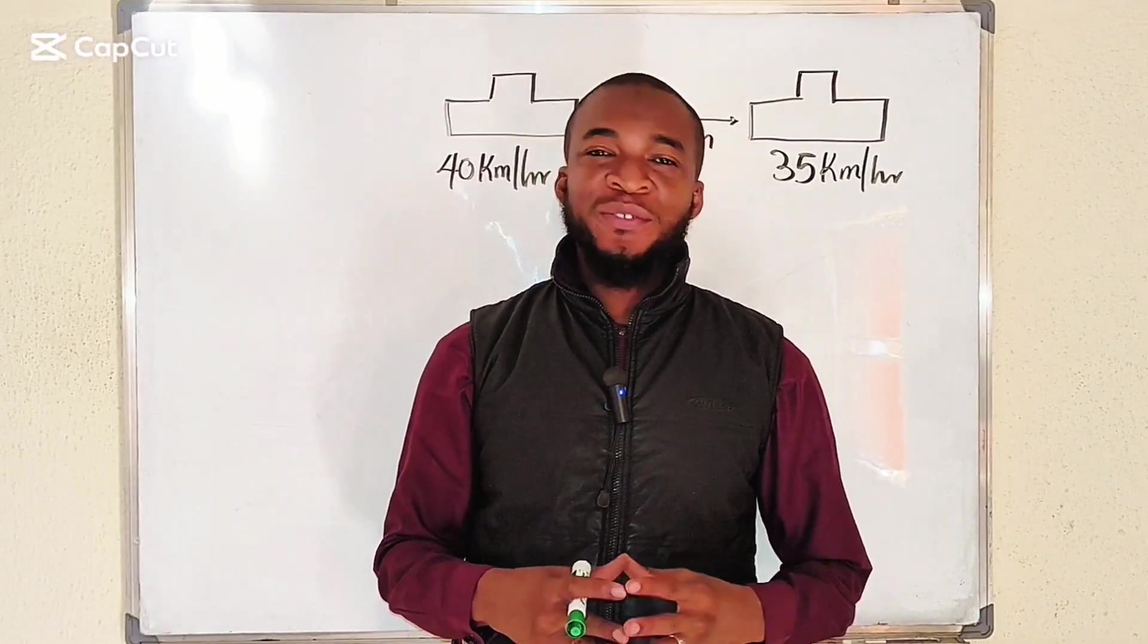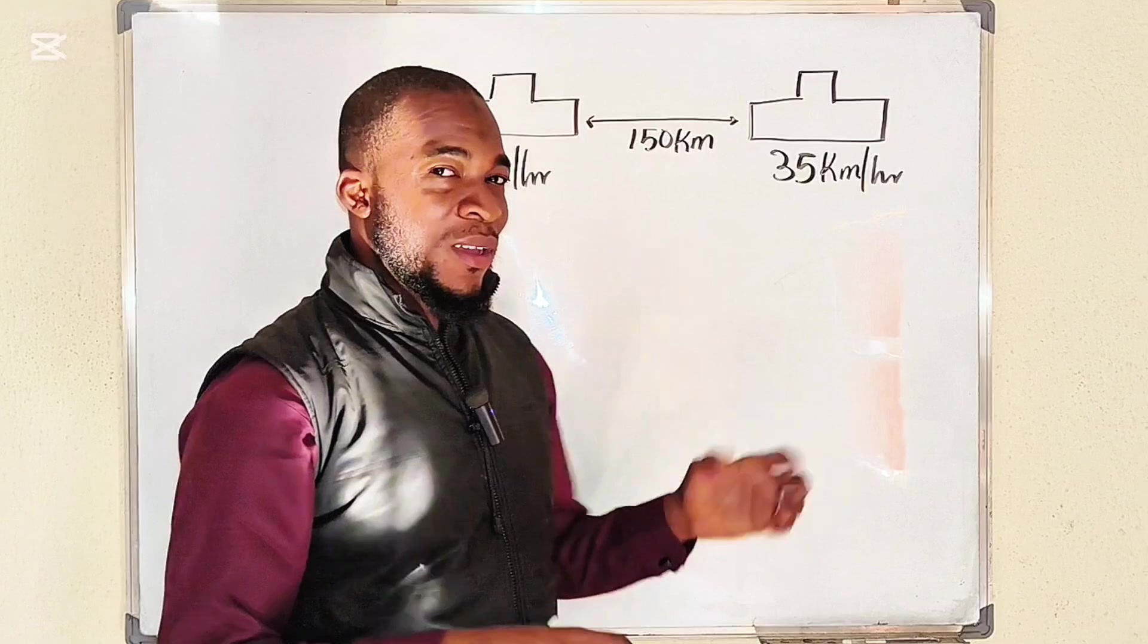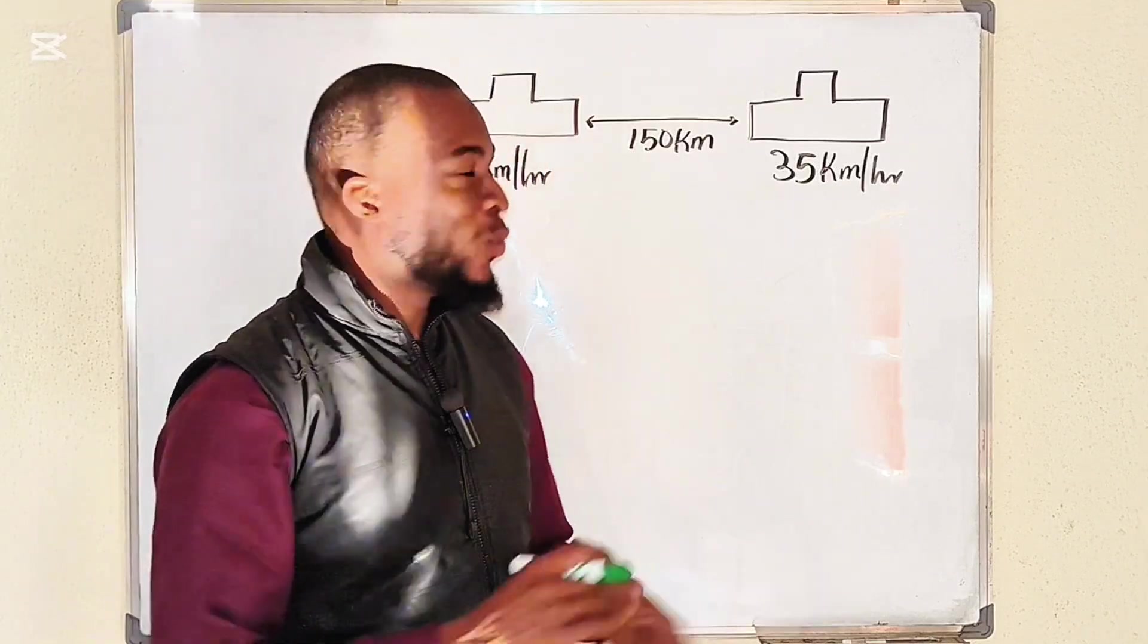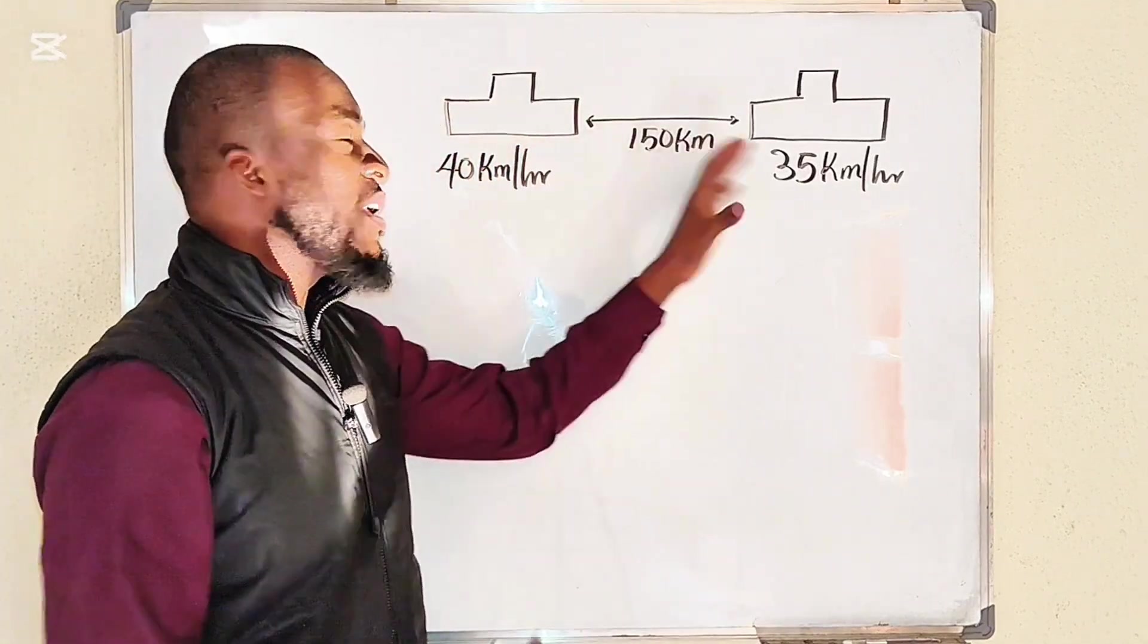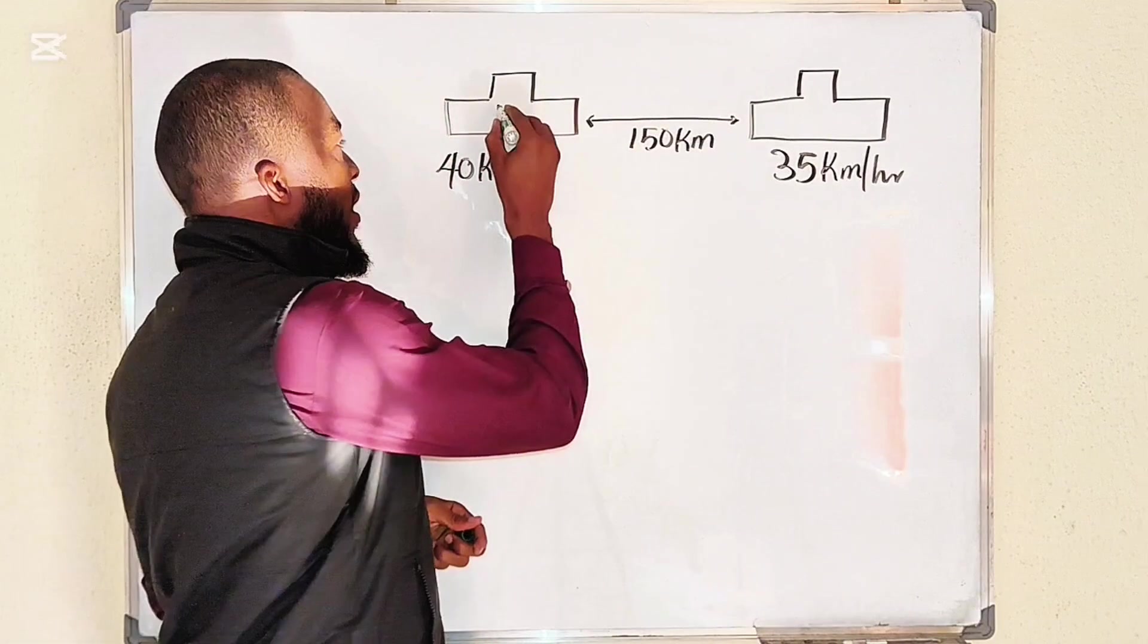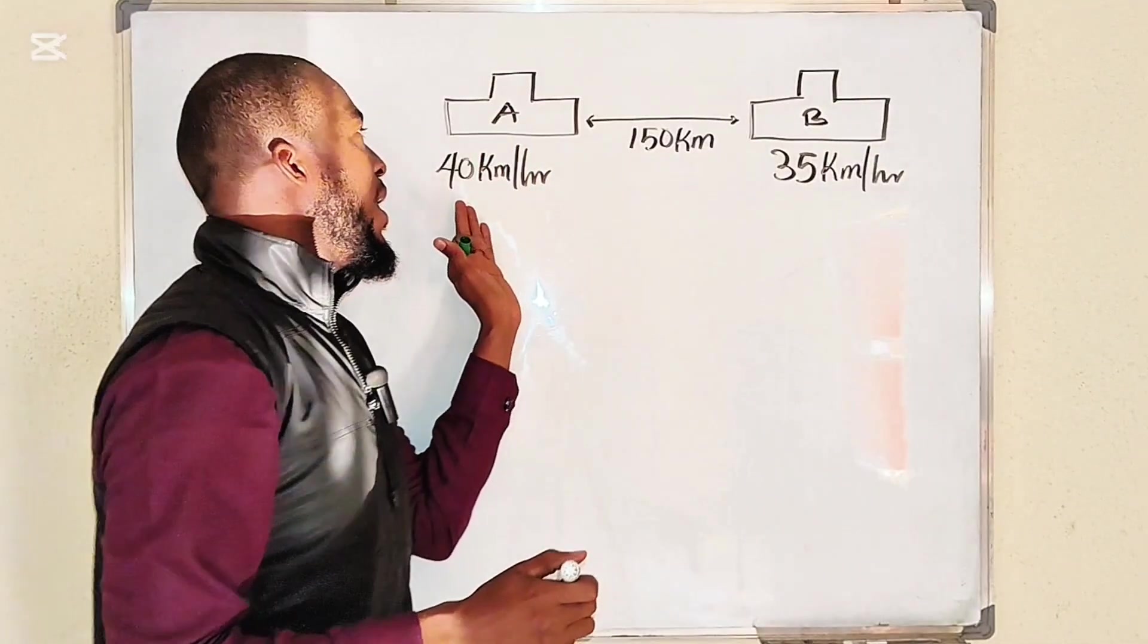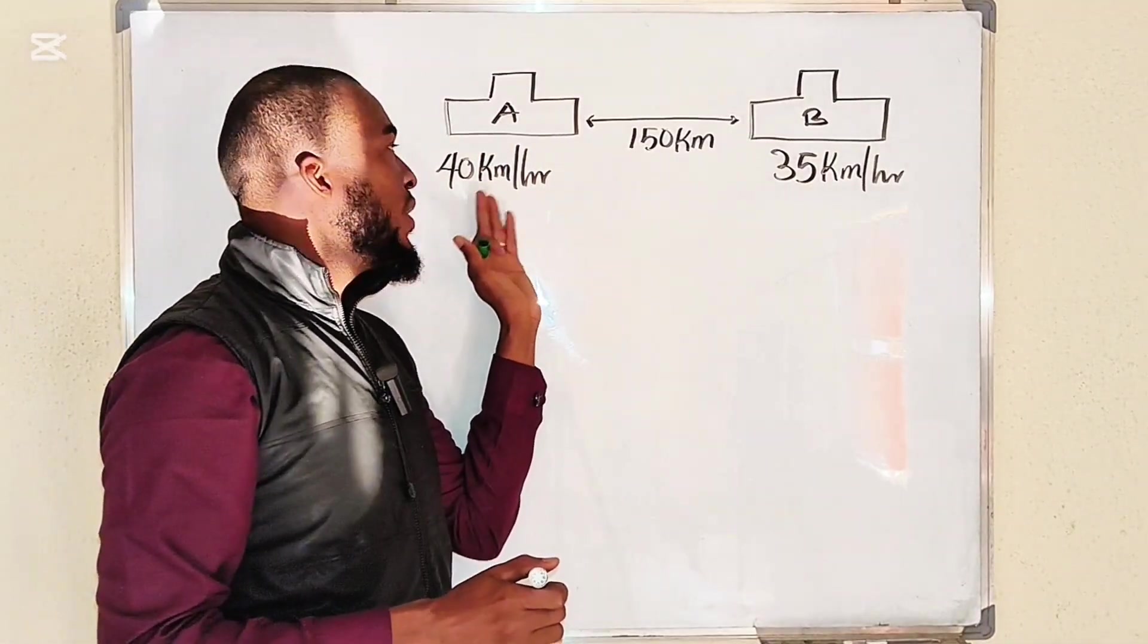Hello everyone, in this tutorial I'm going to show you two different ways to solve this problem: the shortcut way and the standard way. We have two cars here coming towards each other. The first car, let me call it Car A, and this one should be B. Car A is moving at a speed of 40 km per hour while Car B is moving at the rate of 35 km per hour.